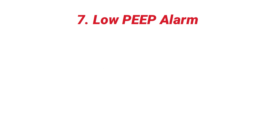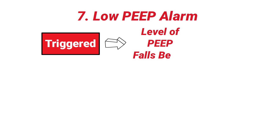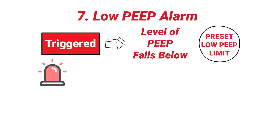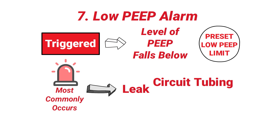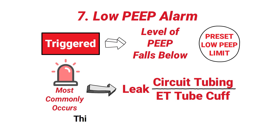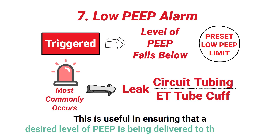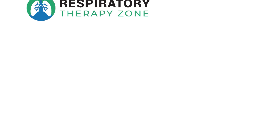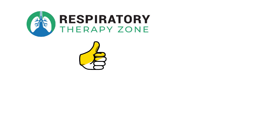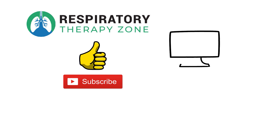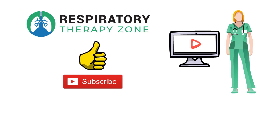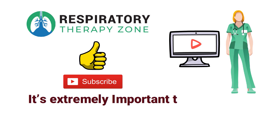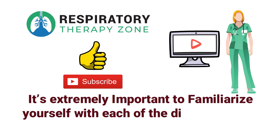Finally, there is the low PEEP alarm. A low PEEP alarm in mechanical ventilation is triggered whenever the level of PEEP falls below a preset low PEEP limit. This most commonly occurs whenever there is a leak in the circuit tubing or the endotracheal tube cuff. This alarm is useful in ensuring that a desired level of PEEP is being delivered to the patient. As a respiratory therapist or someone who works in critical care, it's extremely important to familiarize yourself with each of the different types of ventilator alarms.